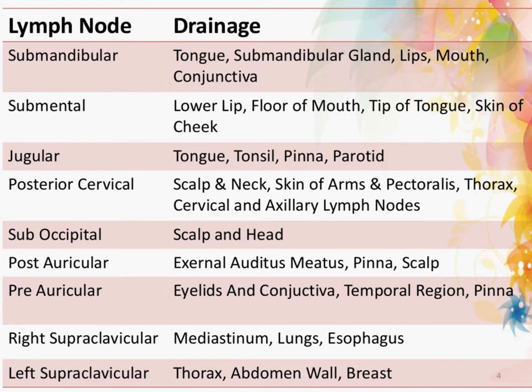The submental lymph nodes drain mainly the tongue, mouth, and conjunctiva. The submandibular lymph nodes drain the lower lip, the tip of the tongue, and the cheeks. The jugulodigastric nodes drain mainly the tonsils and the parotid. The posterior cervical lymph nodes drain mainly the scalp and skin of the arms and thorax, and the occipital from the scalp and postauricular from the external auditory meatus and the pinna. The preauricular nodes drain mainly the eyelids and the pinna.